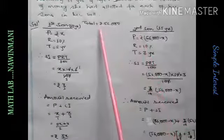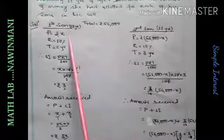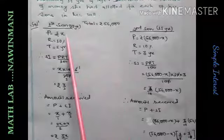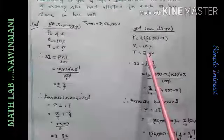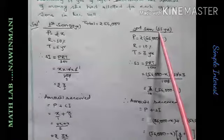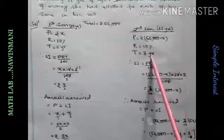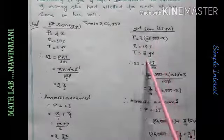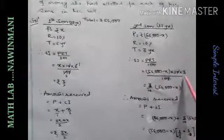Now second's calculation. 56,000 total, X rupees given to first, so remaining how much? 56,000 minus X remaining. That goes to second. Rate is same. Time will be three years. Because he is 15 years already. When he reaches 18 years, three years will be passed. So, calculate SI.